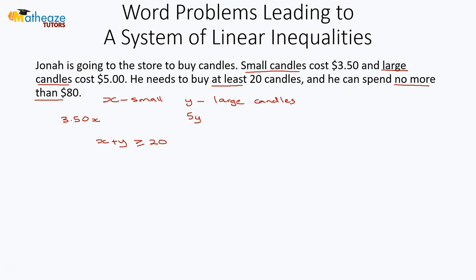So that means that $3.50X plus 5Y must be less than or equal to $80. This is the system that results from this word problem.